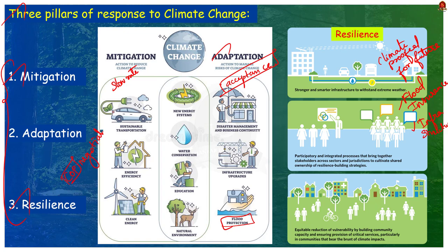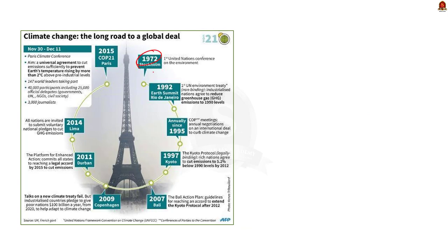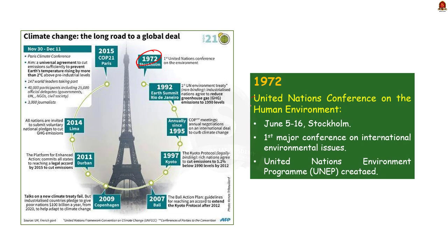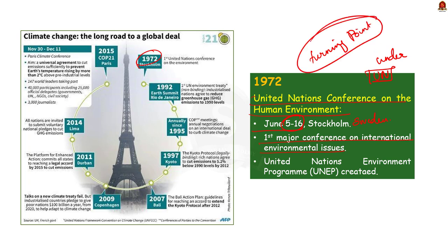All climate change negotiations are based on these three pillars. The timeline begins in 1972 with the United Nations Conference on the Human Environment — an international conference convened under the patronage of the United Nations. Since it was held in Stockholm, Sweden, it is also known as the Stockholm Convention. It became the UN's first major conference on international environmental issues and marked a turning point in the development of international environmental politics. One major result was the creation of UNEP, the United Nations Environment Programme.